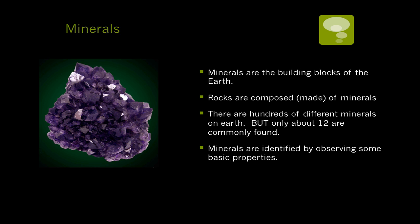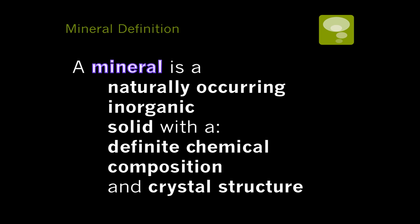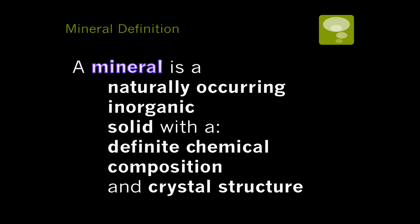To identify a mineral and determine which mineral you are looking at, we observe some very basic properties. Let's first look at the actual definition of a mineral. A mineral is defined as naturally occurring, meaning it is formed by the Earth, not by people. Inorganic, meaning it has never been alive. It is a solid, not a liquid or a gas. It has a definite chemical composition, meaning what it is made of is the same for every sample — so every sample of sulfur is the same as every other sample. And it has a crystal structure — more on that later.